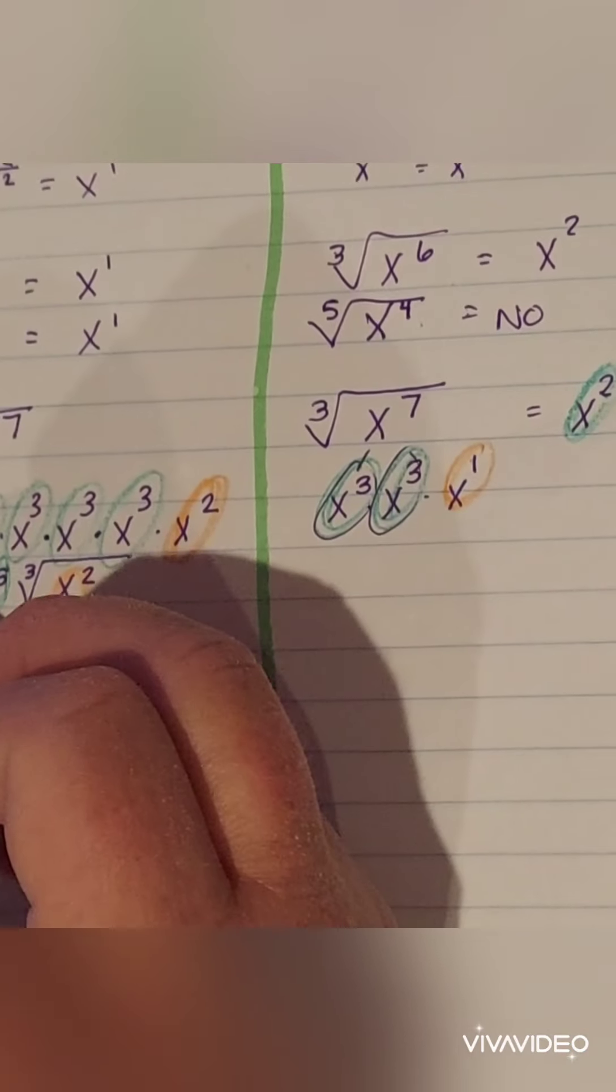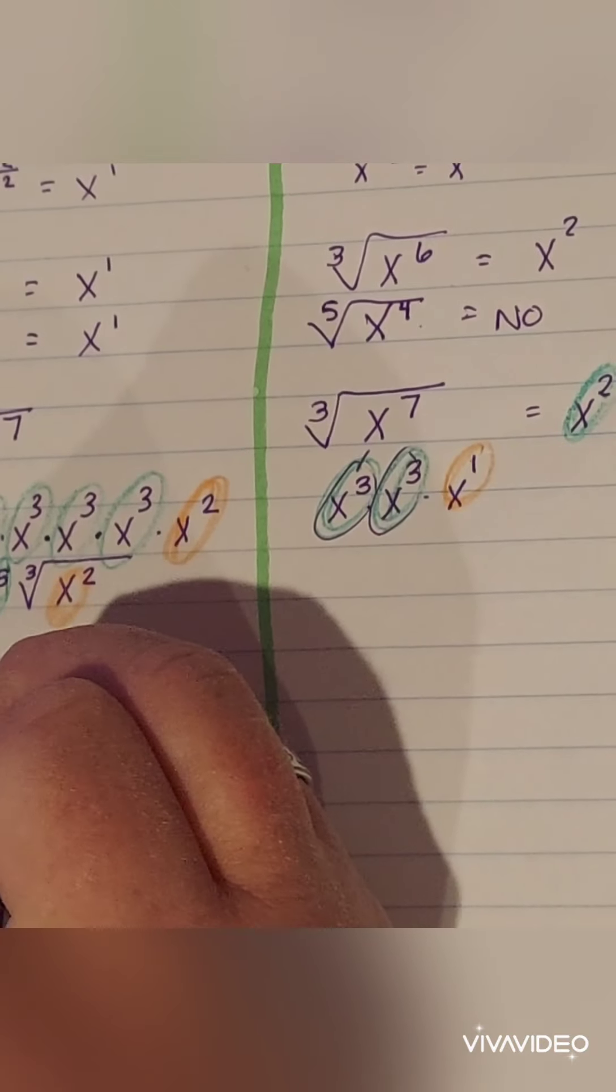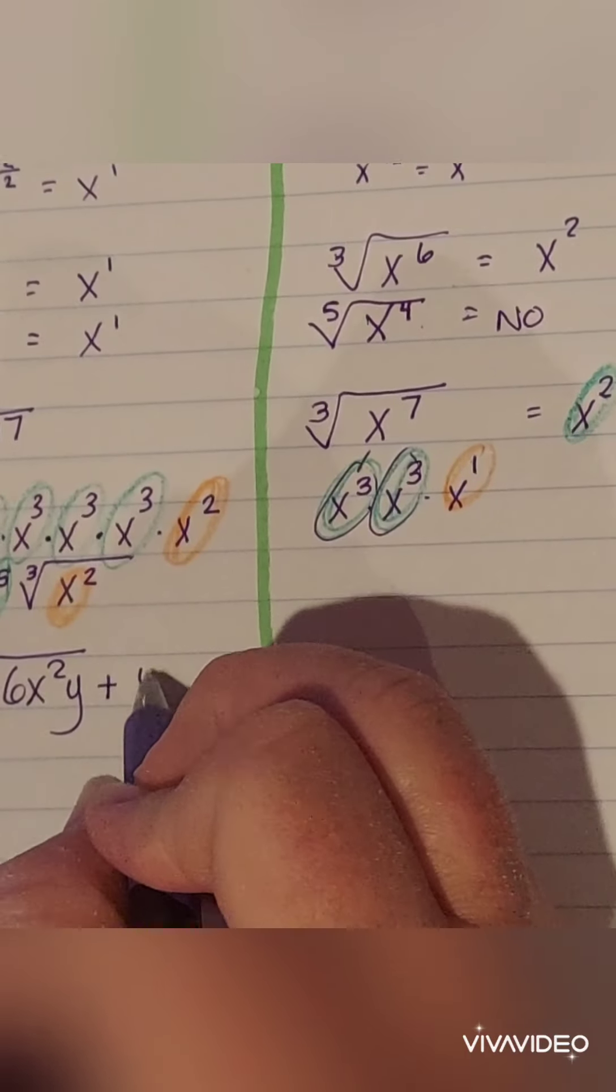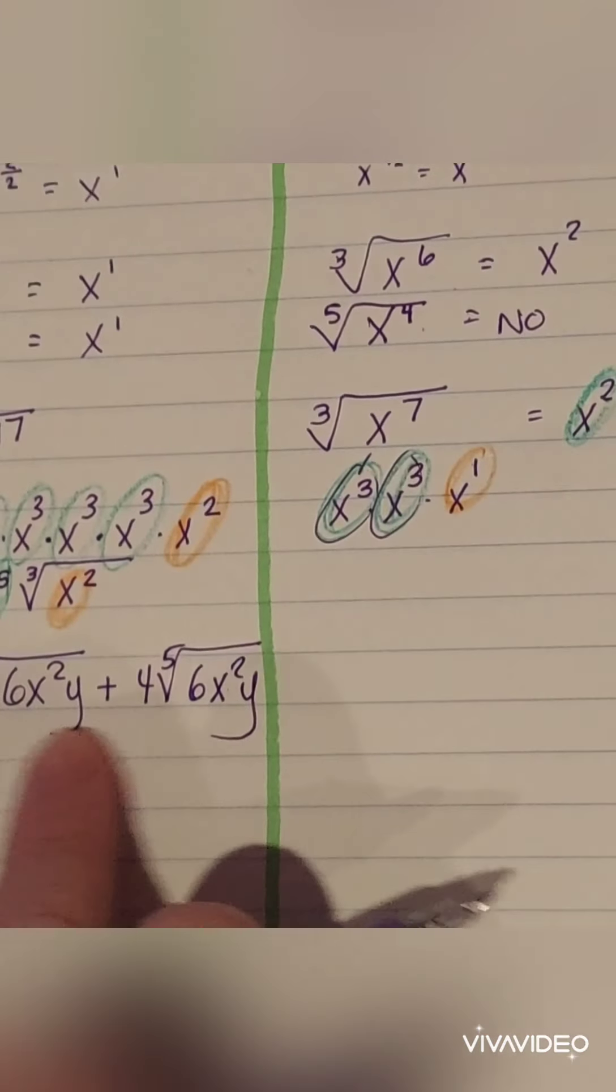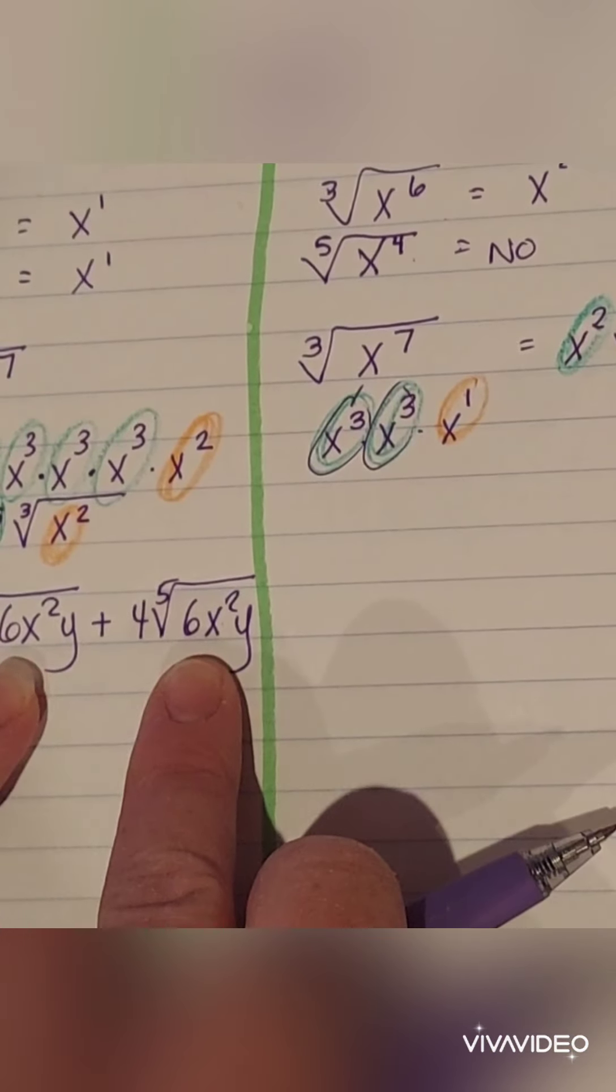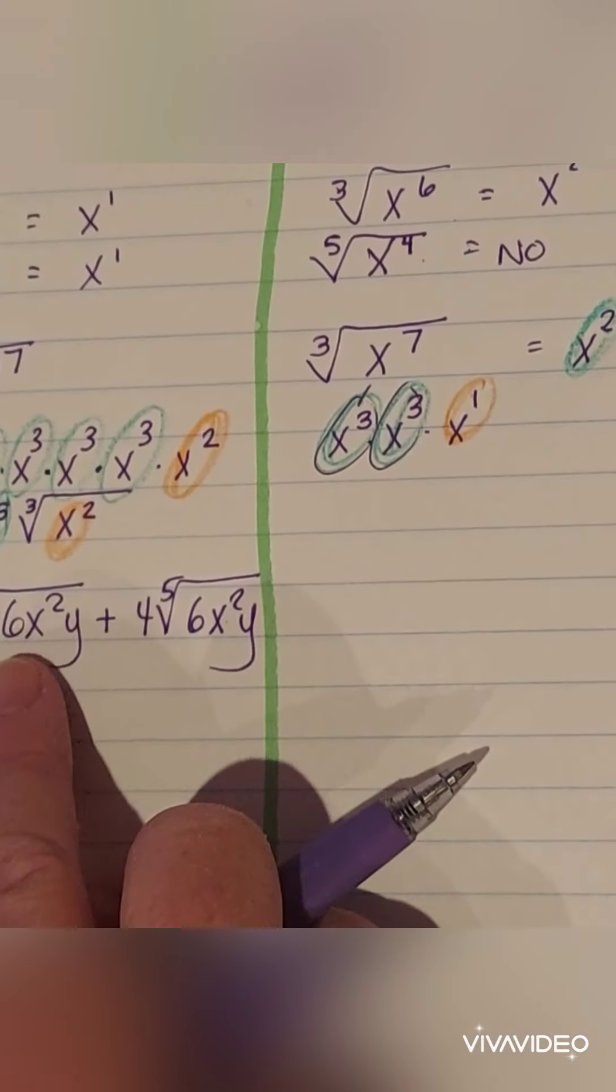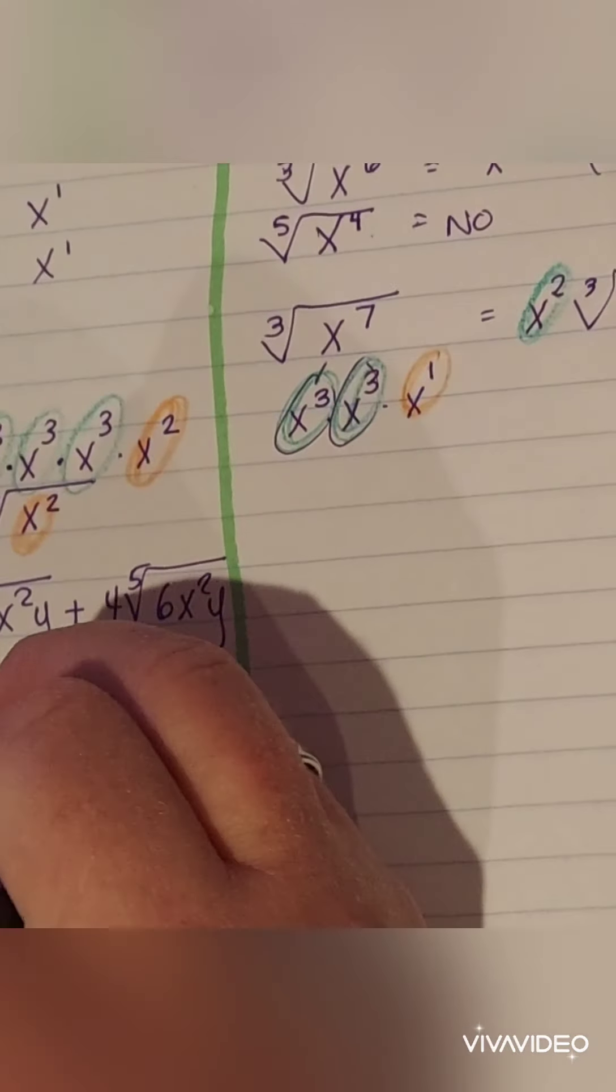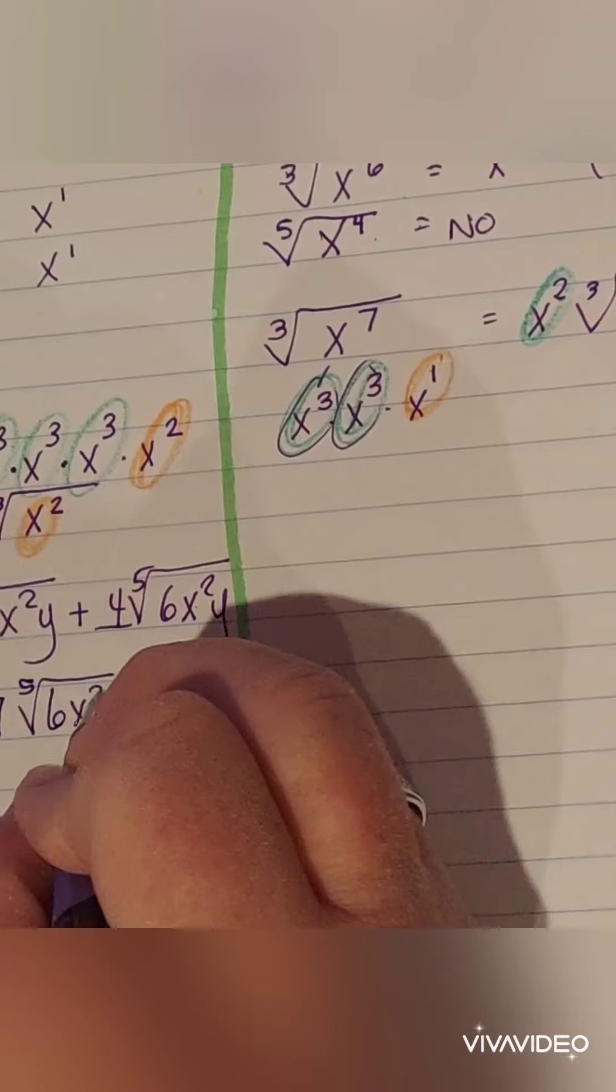So I'm going to put a star because this was all simplifying stuff. So let's do an adding one. I just want to make sure that you understand that the same rules apply as they did before. In order to add these together, these two have to be the same. So are they the same? Yes. They're both fifth roots. So I have three fifth roots of six X squared Y plus four fifth roots of six X squared Y. Together that makes three plus four is seven fifth root of six X squared Y.